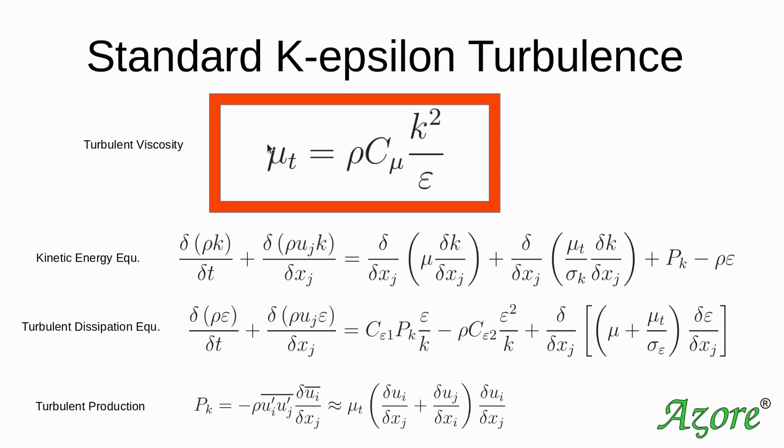And this term right here, the empirical relationship, how do you come up with what the turbulence, how it impacts these equations, what is that? And so, how do we quantify that? And typically, most two-equation turbulence models, they choose two fundamental relationships.